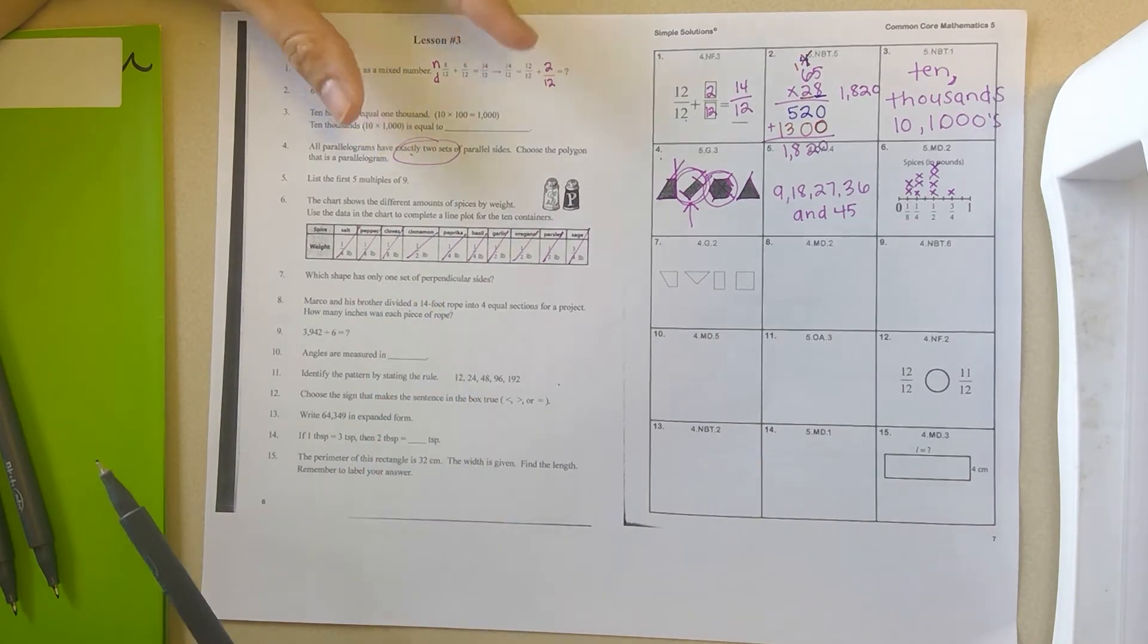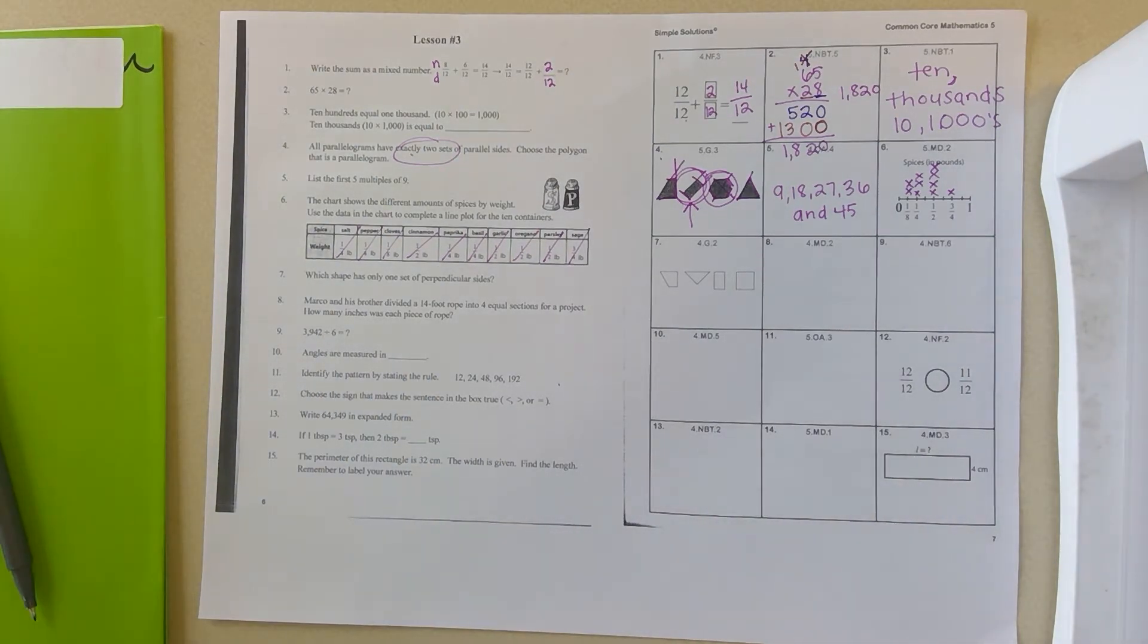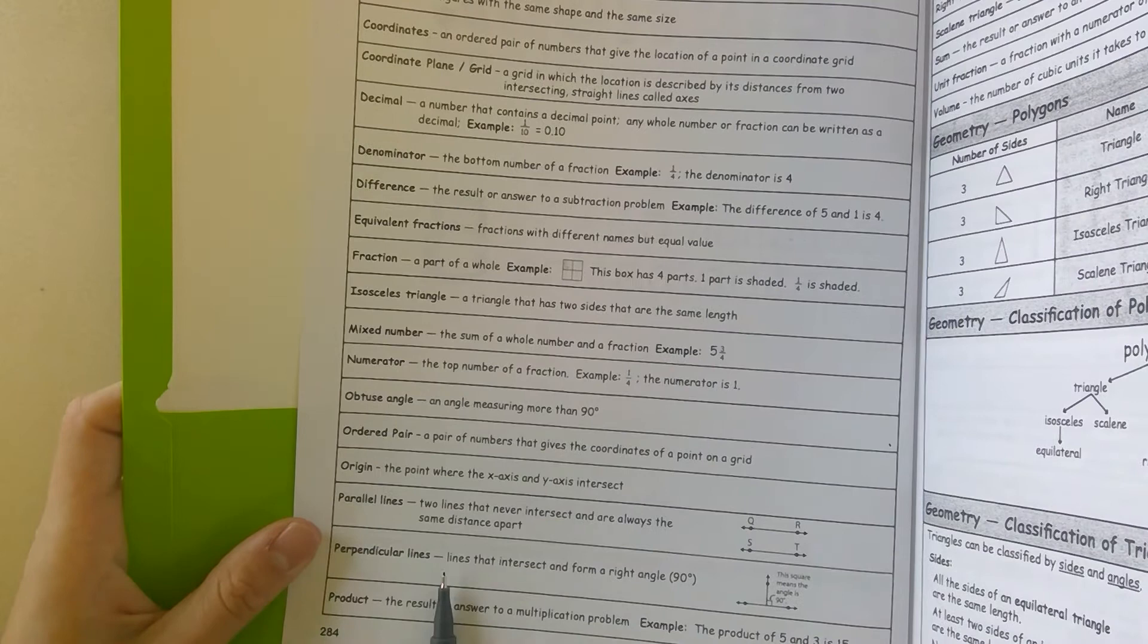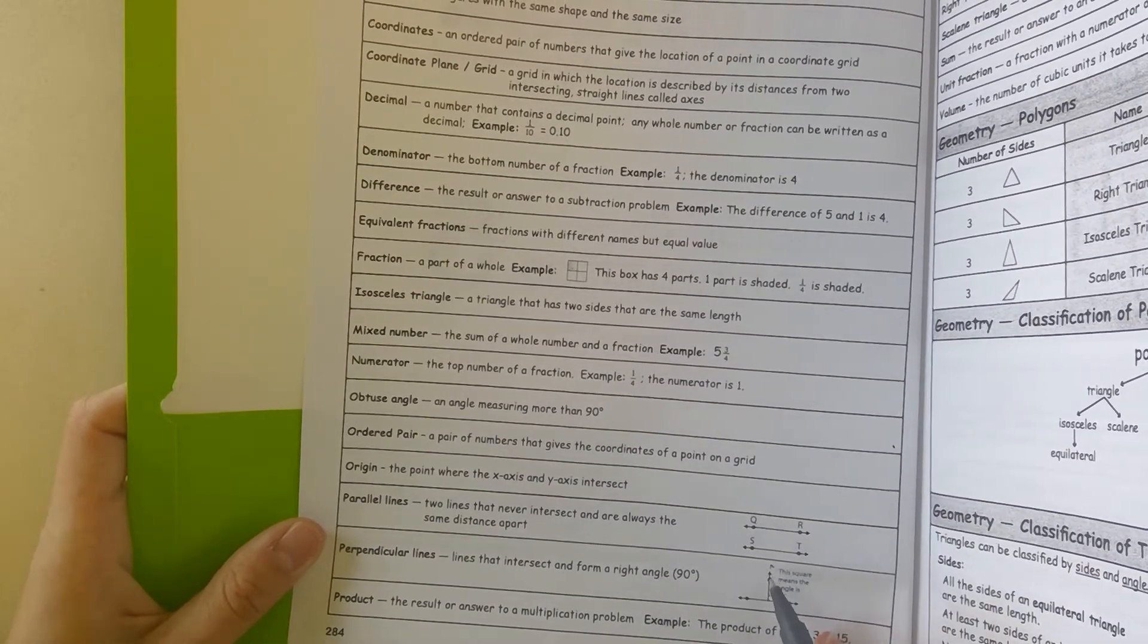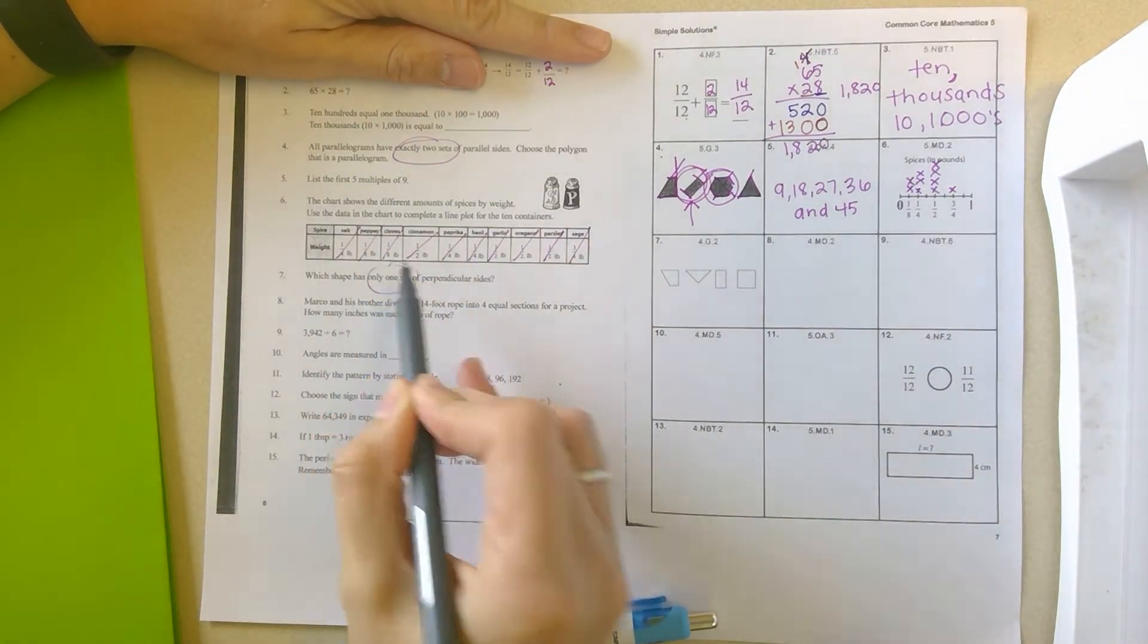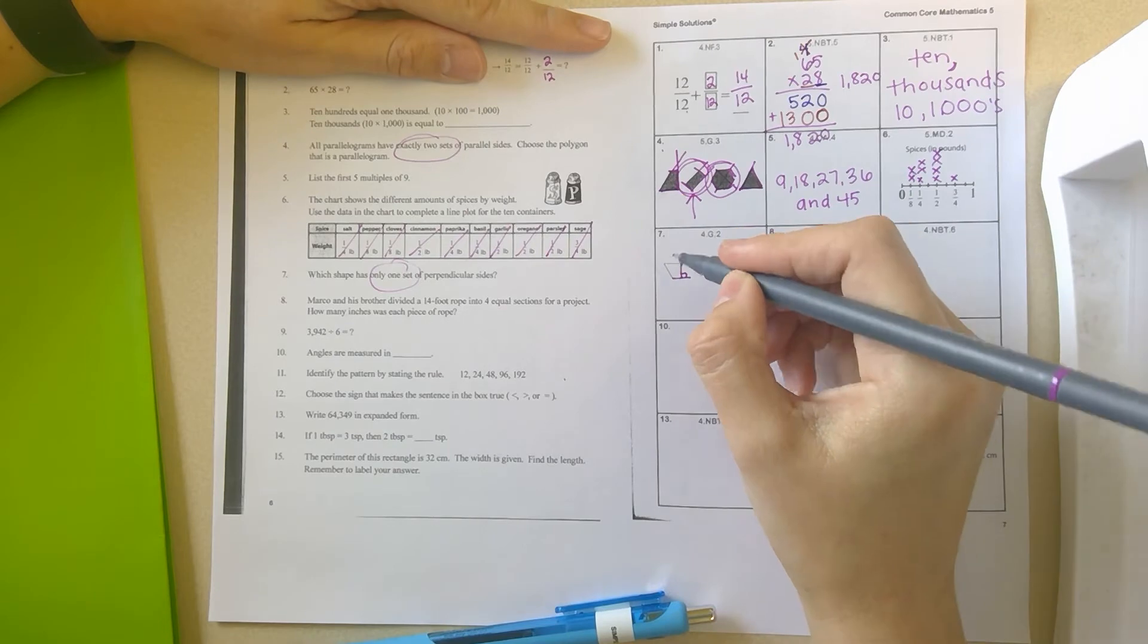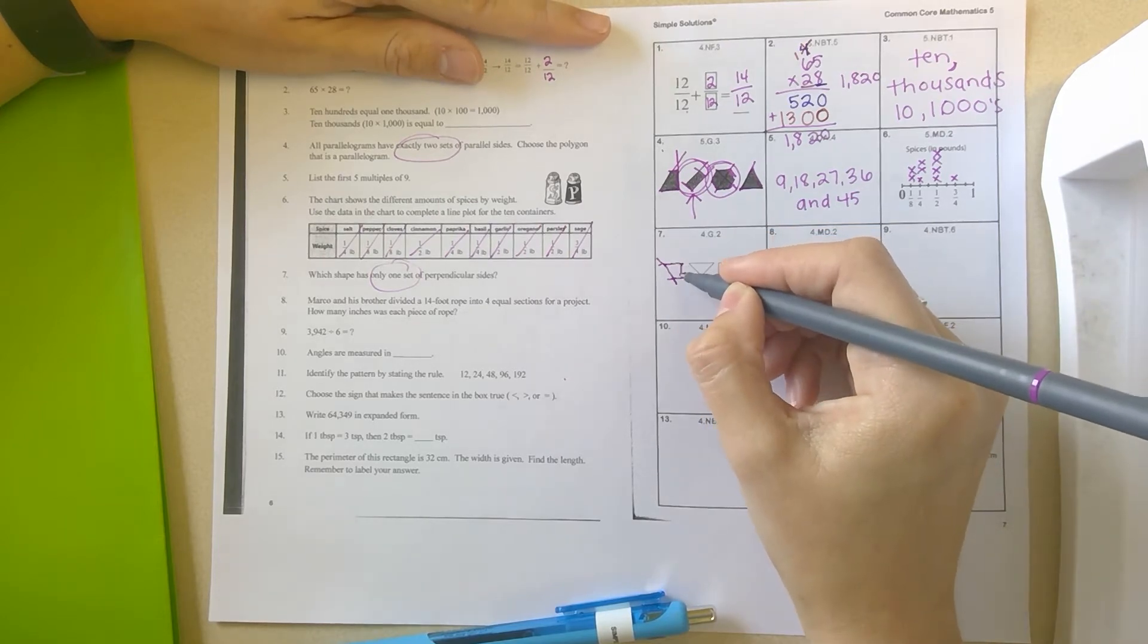Number 7. Which shape has only one set of perpendicular lines? So perpendicular, if you do not know, you can always look in your help pages. So let me close these pens. So I'm going to open up perpendicular, right here. Perpendicular lines, lines that intersect and form a right angle. So it's almost like an upside down T. So when you put this line here and you put this line here, both of them together make a right angle. So let's look. And there should only be one is what it says. It says only one set.